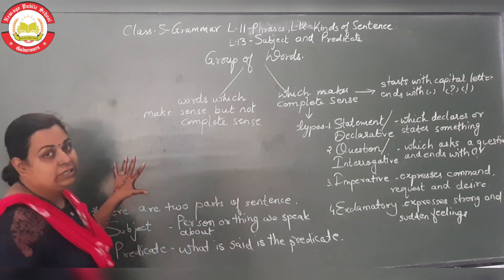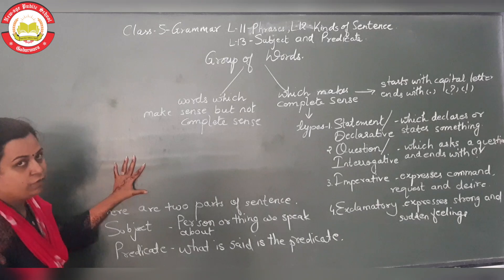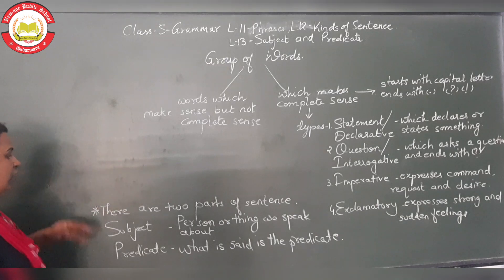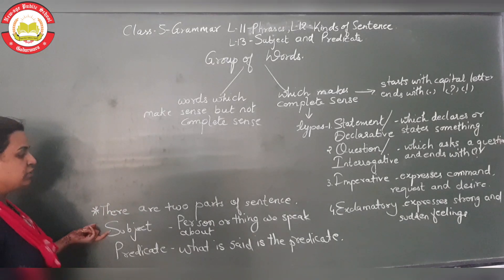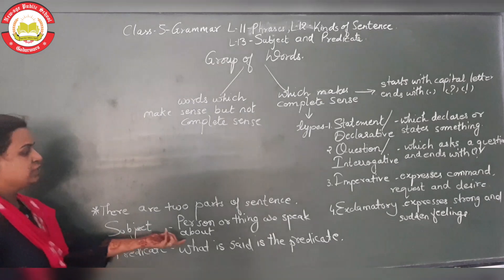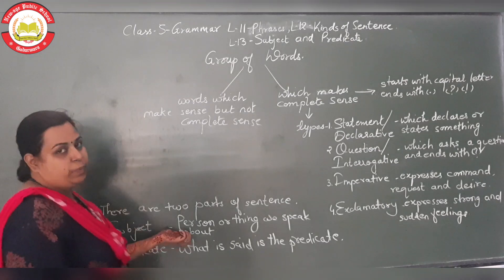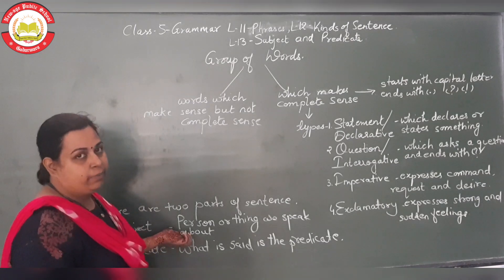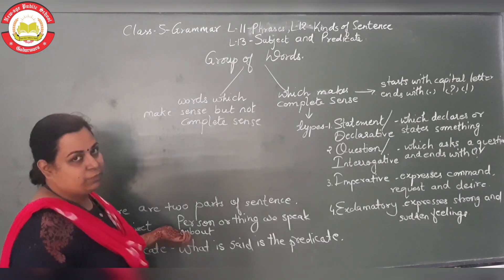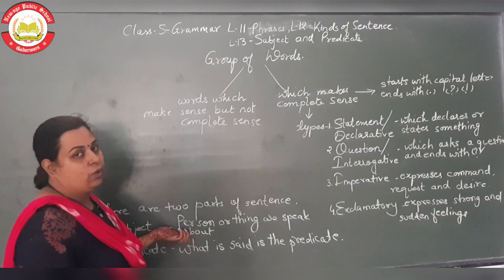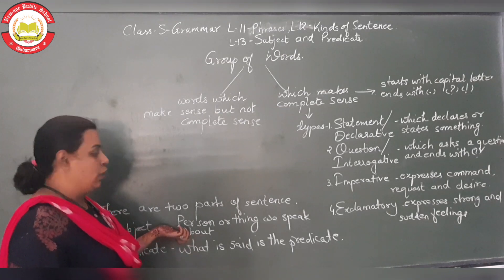Now we will be talking about the parts of sentences. A sentence has two parts: subject and predicate. The first part is the subject — it refers to the person or thing we are speaking about. The one about whom we are talking is called the subject, and it is typically a noun or pronoun.